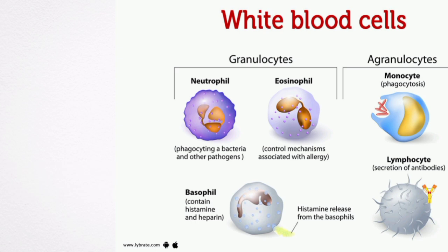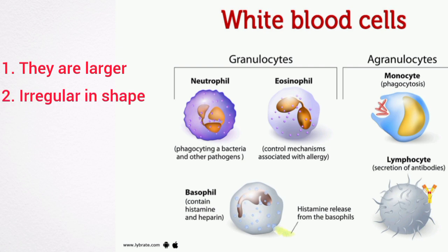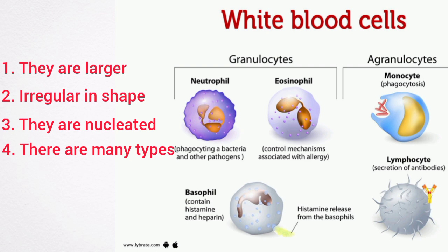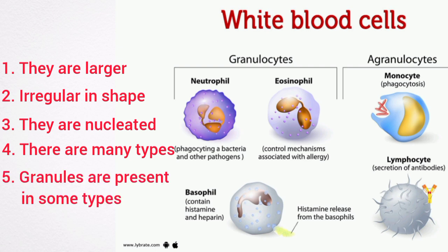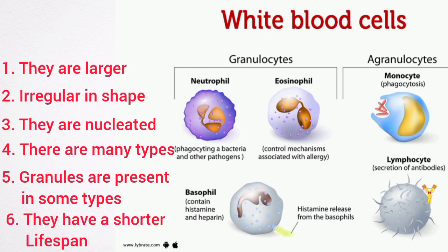White blood cells differ from red blood cells in many aspects. Number one is that they are larger in size. Number two is that they are irregular in shape. Number three is that they are nucleated. Number four is that there are many types of white blood cells. Number five is that granules are present in some types. Number six is that they tend to have a shorter lifespan compared to red blood cells.